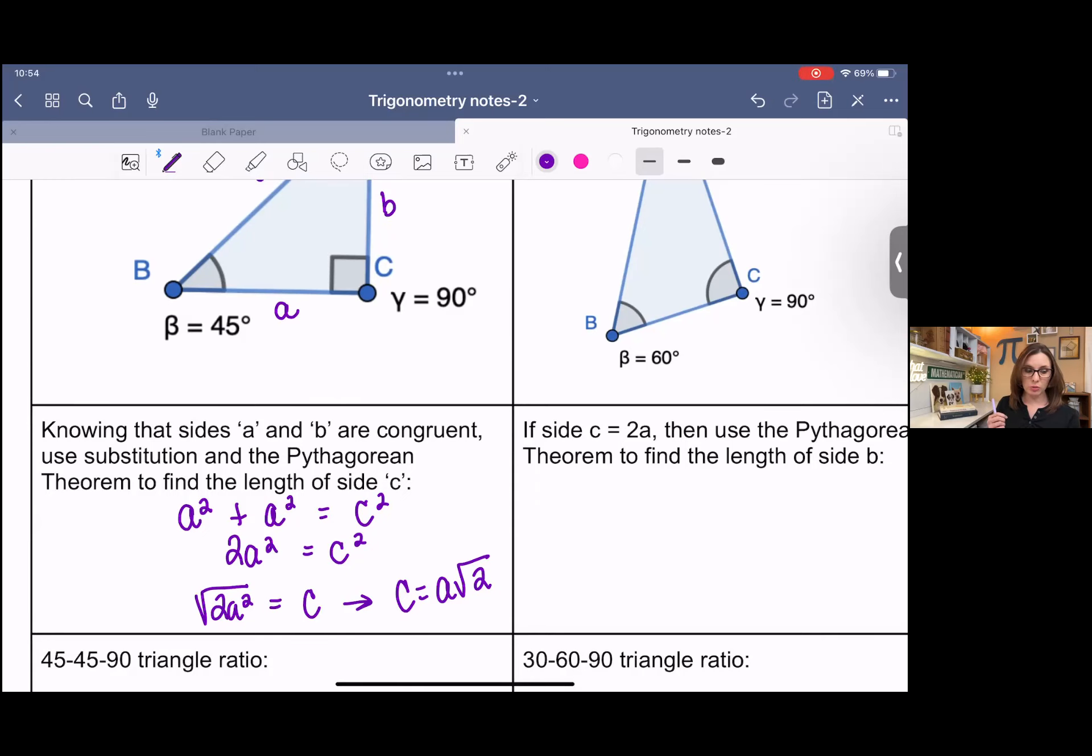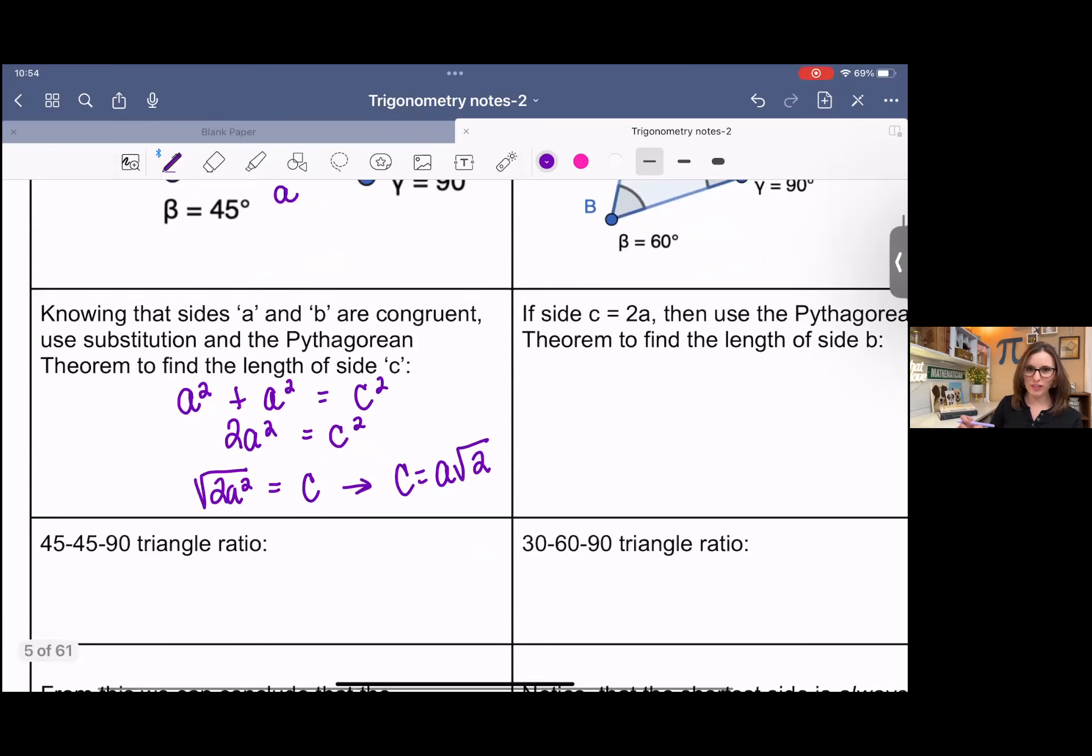So I can say that for any 45-45-90 triangle, the ratio is a, a, a root 2. So if you can find one side, then you can find all three sides. So these are unique because in other right triangles, not special ones, you have to have two sides. And in these cases, the case of the 45-45-90 and the 30-60-90, if you just have one side, you can find the other two missing sides using the ratio.